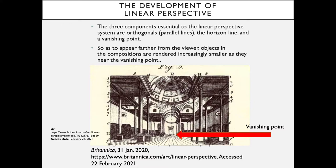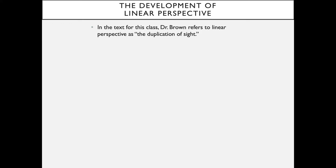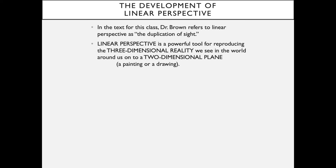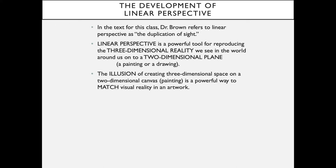In the text for this class, Dr. Brown refers to linear perspective as 'the duplication of sight,' which is pretty amazing if you think about it in those terms. Linear perspective is a powerful tool for reproducing the three-dimensional reality we see in the world around us onto a two-dimensional plane, such as a painting or a drawing. The illusion of creating three-dimensional space on a two-dimensional canvas or painting is a powerful way to match visual reality in an artwork.